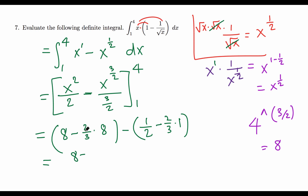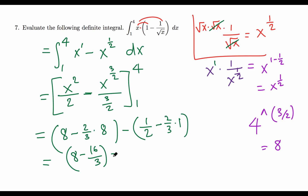So we have: 8 minus (2/3)(8) minus (1/2 minus 2/3). Now (2/3)(8) = 16/3. And we need to combine 1/2 minus 2/3 from the lower limit, then subtract that from the upper limit result.